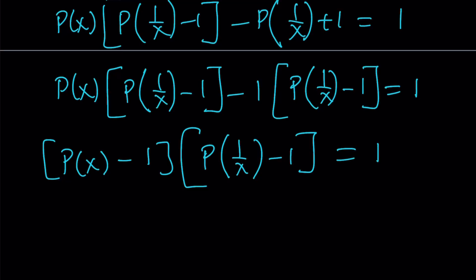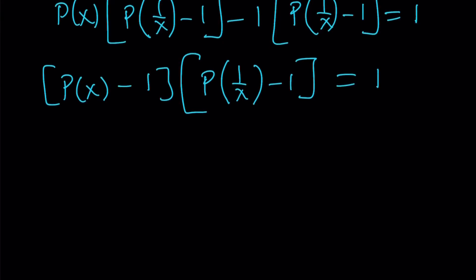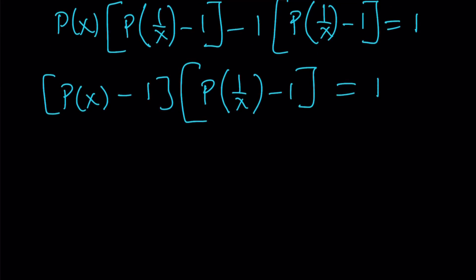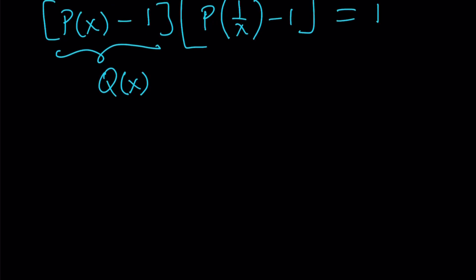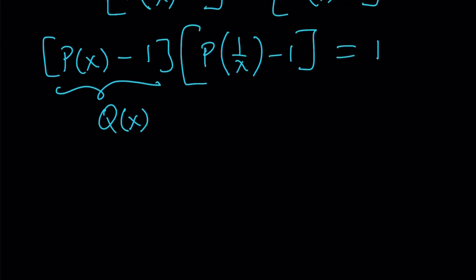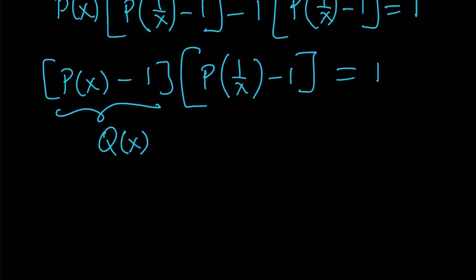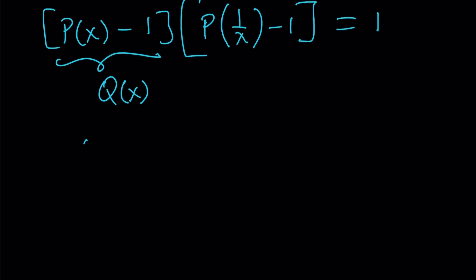Great. So we do have a product, but this product isn't super helpful because we have those minus 1s. So let's go ahead and get rid of them by calling this P of X minus 1 another polynomial. Let's name this Q of X, where Q of X is just like another polynomial. So if P of X minus 1 is equal to Q of X, then it means Q of 1 over X is P of 1 over X minus 1. We just replaced X with 1 over X. So from here we get Q of X multiplied by Q of 1 over X equals 1.